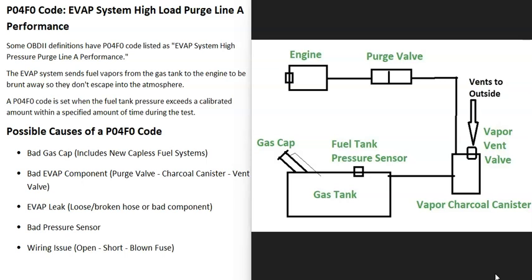Depending on the vehicle — the year, the make, the model — there can be different things going on inside an EVAP system. Components can be located differently and named differently. If you do go to work on your vehicle, it's always a good idea to get a diagram for your specific vehicle so you know exactly what's going on.